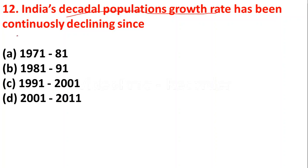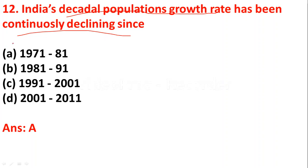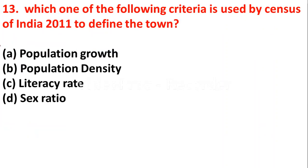Question 12: India's decadal population growth rate has been continuously declining since: option A - 1971–81; option B - 1981–91; option C - 1991–2001; option D - 2001–2011. The correct answer is option A, since 1971–81.